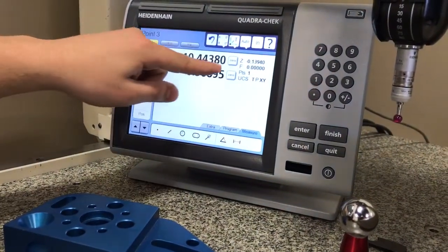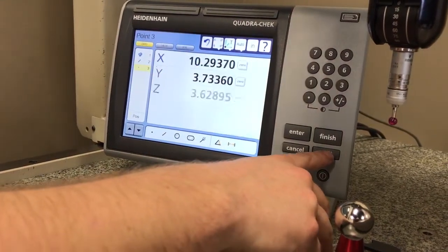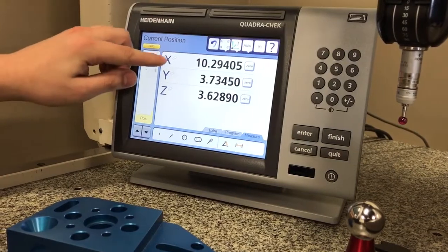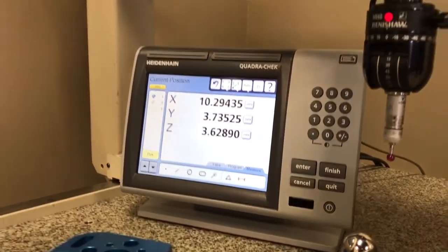Now I can zero my x. I'm going to press quit to go back to the main screen. Now you notice these little symbols up here represent that you've established your datum and your part coordinate system.